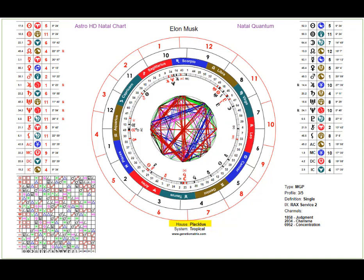Below that you'll see 'System: Tropical.' Astrology comes in several flavors — tropical is the basis for the human design calculation and also a bona fide astrological calculation. This indicates the tropical system has been used for the combination of the human design and astrological calculation. In the system dropdown above every chart you'll see other system methods for calculating charts.